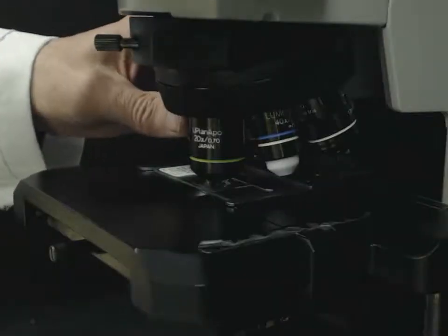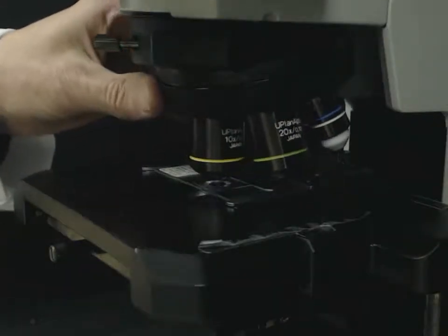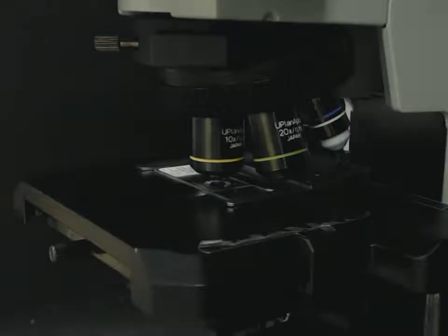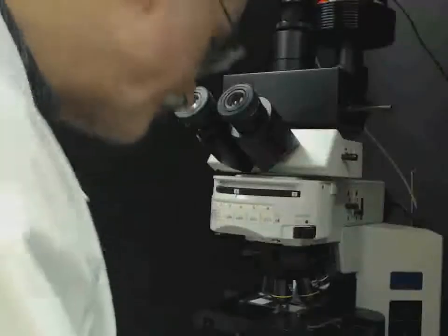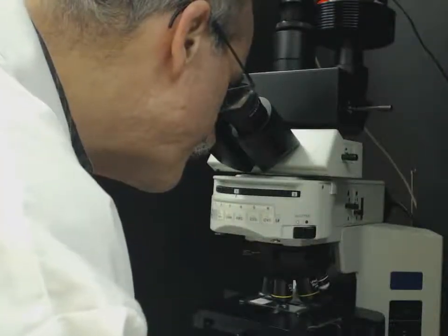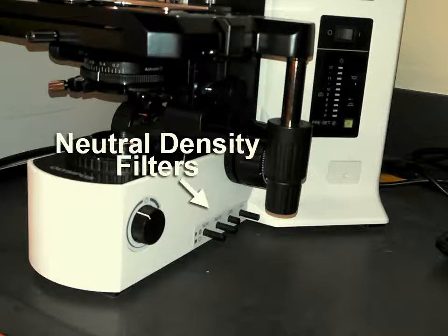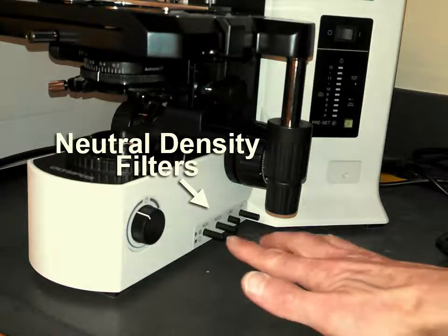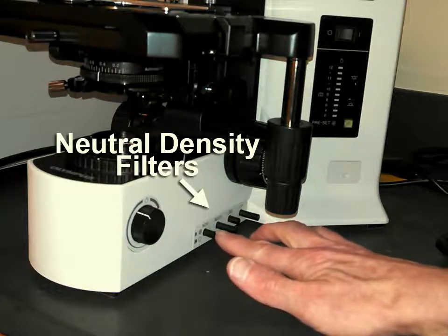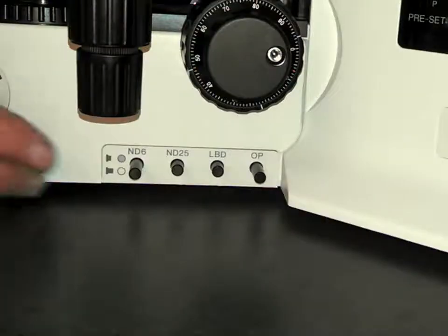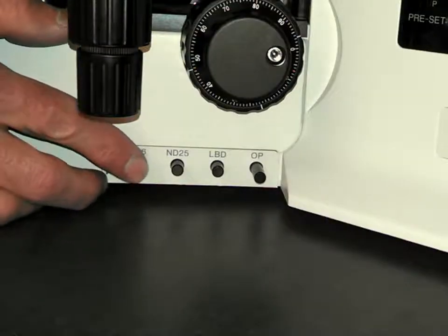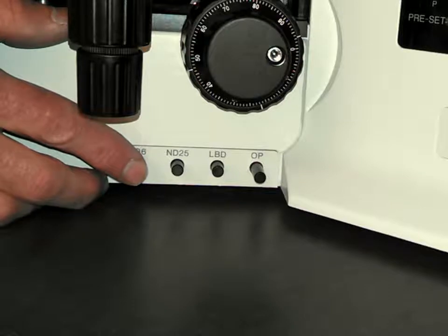Set objective to 10x if possible. If the lamp is too bright or too dark, move neutral density filters in or out of the light path. Here this is done by pressing a bar. On your microscope you may need to use a slider or some other method.